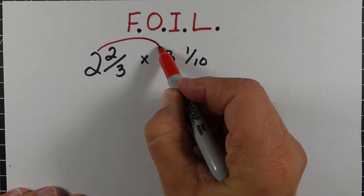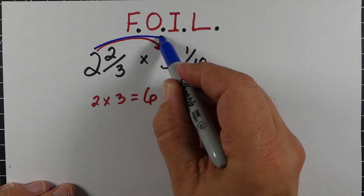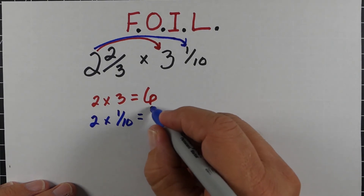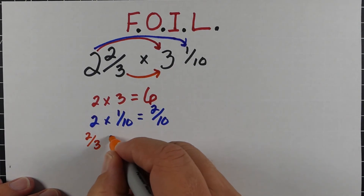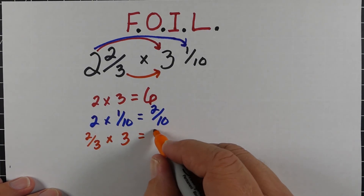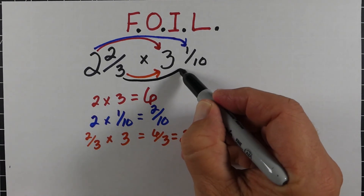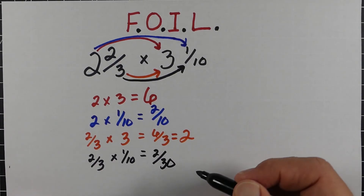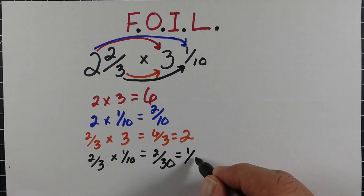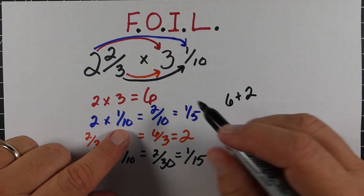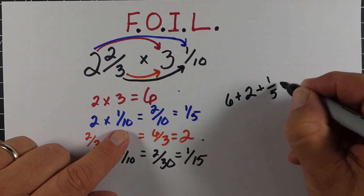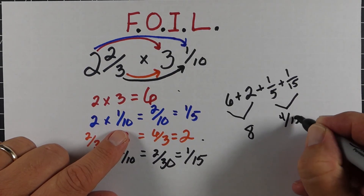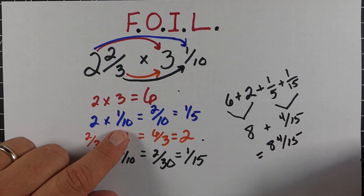One more example using FOIL. Two times three is six — that's the first. Outside: two times one-tenth is two-tenths or one-fifth. Inside: two-thirds times three is six-thirds or two. Last: two-thirds times one-tenth is two-thirtieths or one-fifteenth. Then we add them all up — the two and the six together equal eight. Then one-fifth plus one-fifteenth is four-fifteenths, so the answer is eight and four-fifteenths.